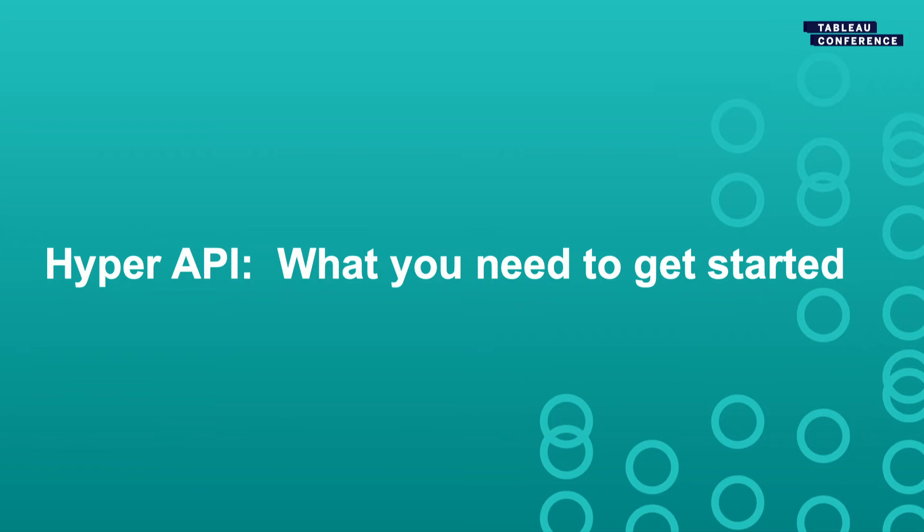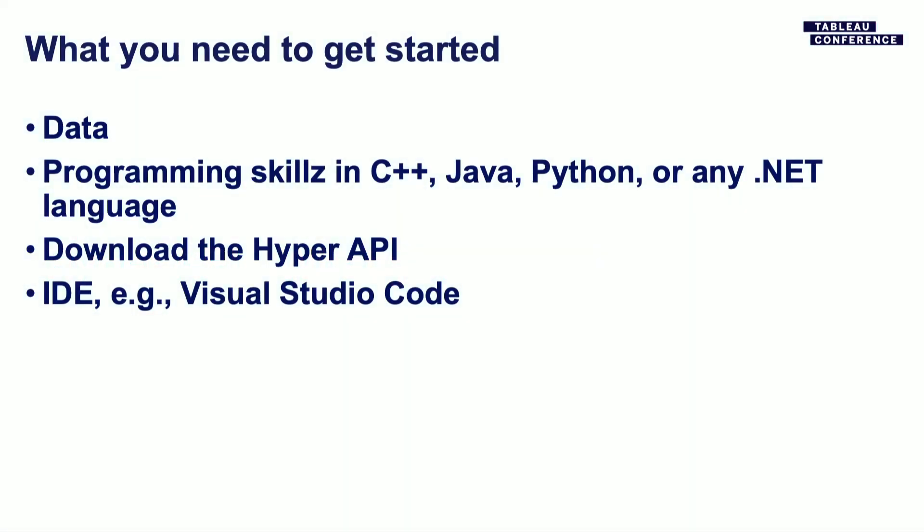What do you need to get started using the Hyper API? It's pretty simple: data, and a programming language. We offer the Hyper API in C, Java, Python, and .NET. Download Hyper, install it, and write code in any IDE. That's all you need to get started.